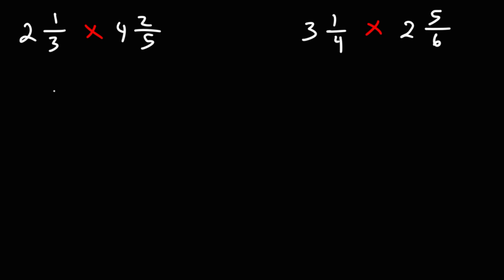So to convert two and one-thirds, first take note of the denominator. It's going to stay the same. To get the numerator, it's going to be two times three which is six, plus one. So that's seven. For the next one, the denominator is five, so that's going to stay the same. To get the numerator, it's going to be four times five which is 20, plus two, so that's 22.